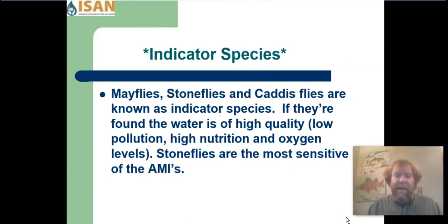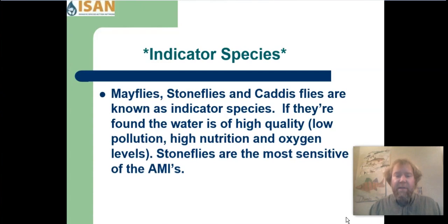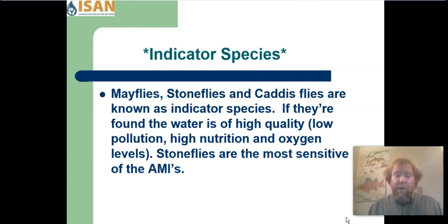Mayflies, stoneflies, and caddisflies are known in the scientific world as indicator species. They can indicate how healthy or unhealthy the water is. If you have mayflies, stoneflies, and caddisflies in your river, creek, or stream, you know that the water is very healthy — low pollution, high oxygen, high nutrition. Stoneflies are the most sensitive of all the aquatic macroinvertebrates.